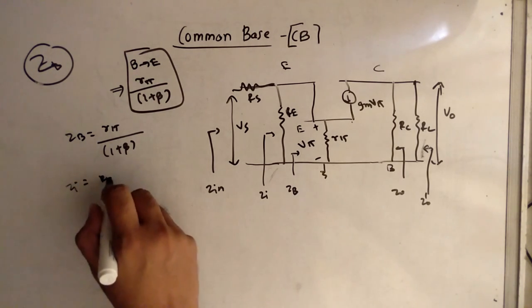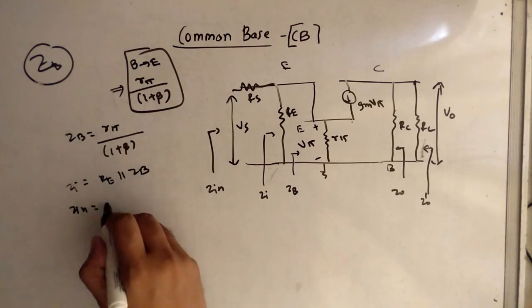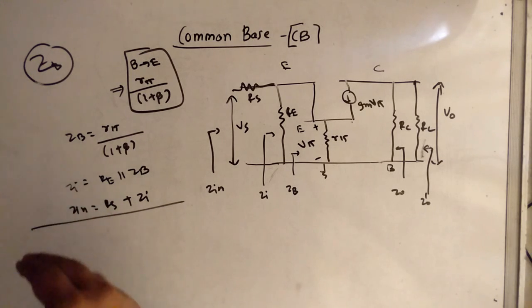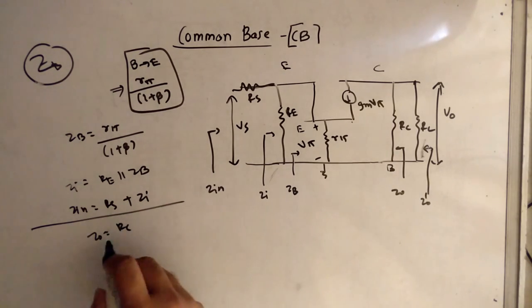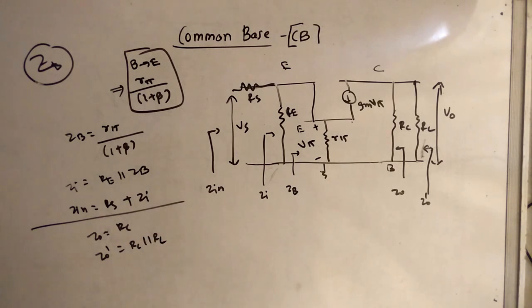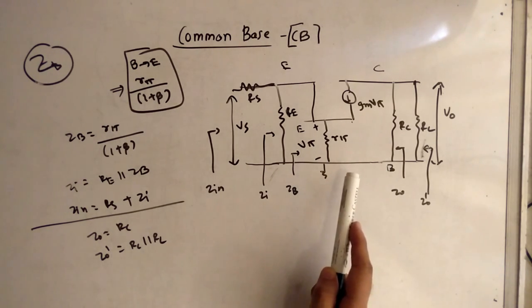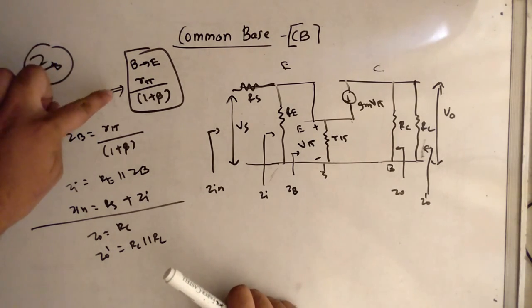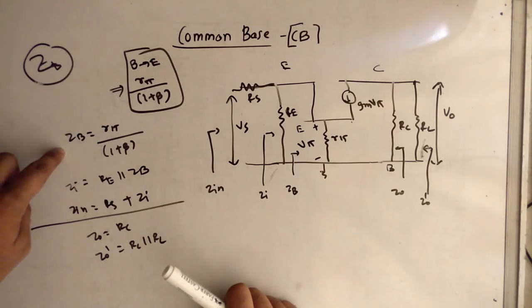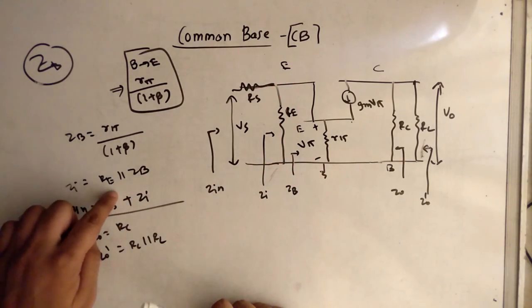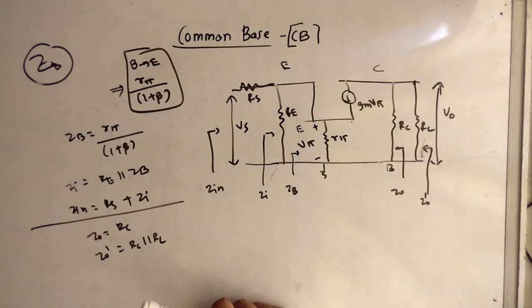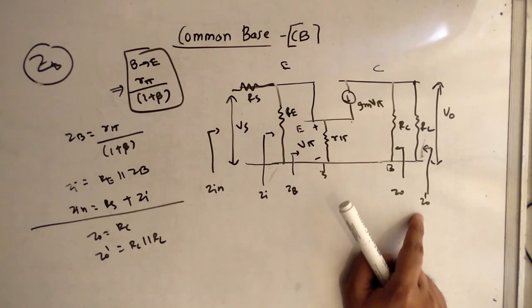ZI is RE parallel ZB. ZIN is RS plus ZI — these are the input impedances. The output impedance is also straightforward: ZO is RC, and ZO' is RC parallel RL. So ZB brings R pi from base to emitter side divided by 1 plus beta; ZI is ZB parallel RE; ZIN is ZI plus RS; ZO is RC; ZO' is RC parallel RL.